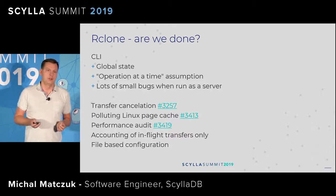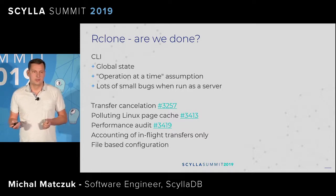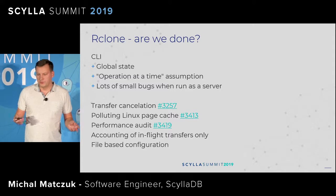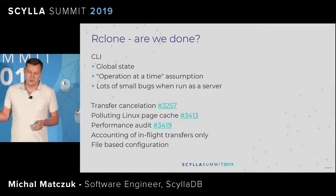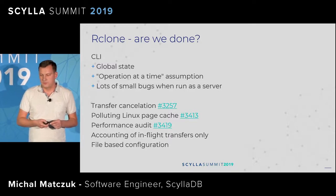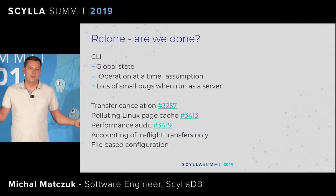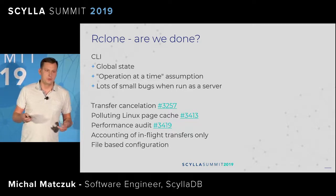Most of the changes were caused by the fact that RClone is designed as a CLI tool with global state and a design mentality that only one operation runs at a time — we needed to resolve that. We also added missing features like transfer cancellation, which was a huge effort requiring changes to function signatures across almost all the code. We did a performance audit and suggested changes, and also fixed a bug with polluting the Unix page cache — similar to incremental compaction strategy, as we read a file we free its pages as we go, to avoid loading too much into memory.